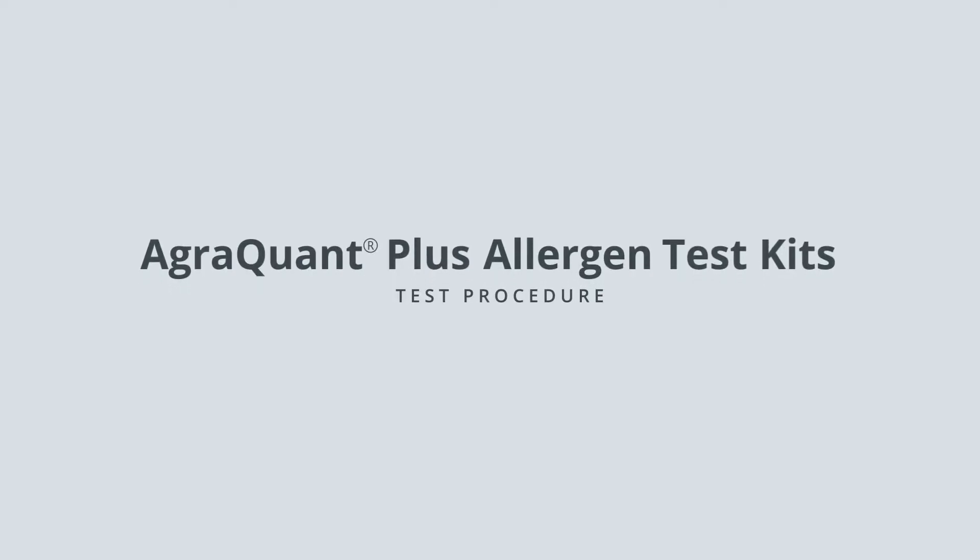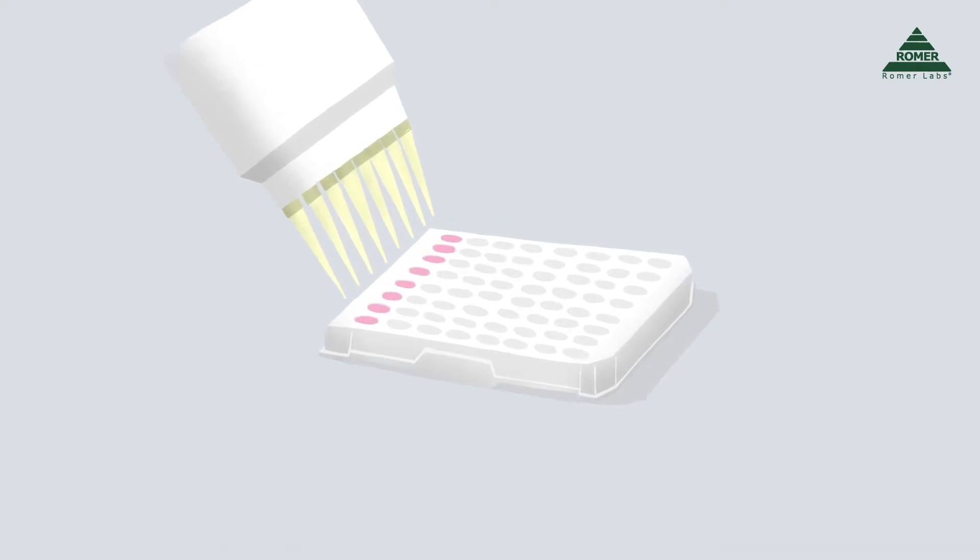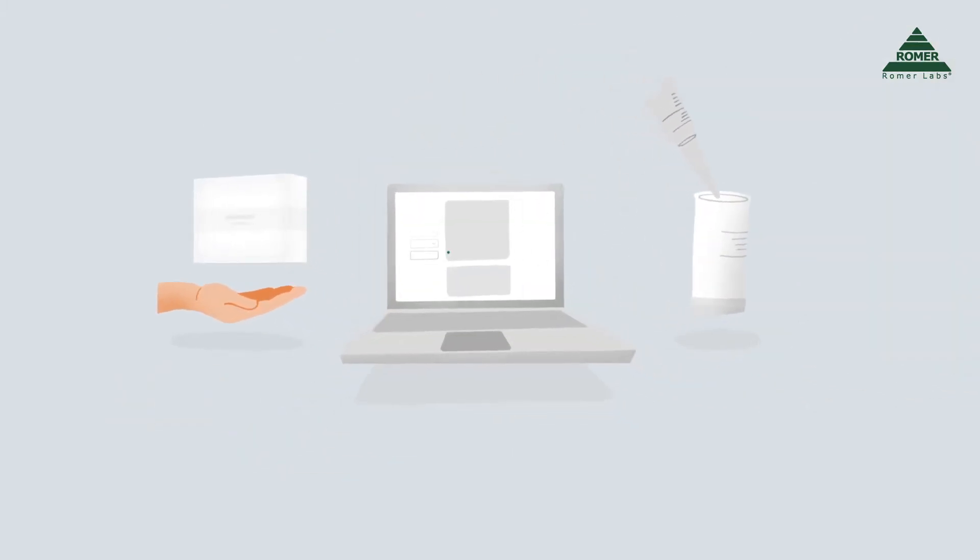AgriQuant Plus Allergen Test Kits are ready-to-use ELISAs that detect a variety of allergenic analytes in a quantitative format. In this video, we will cover the contents of the test kit, how to use the test, and how to interpret results.